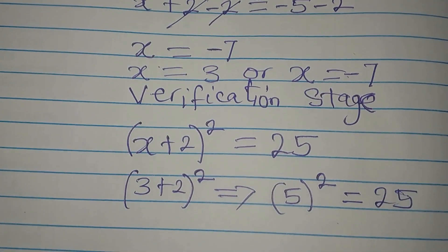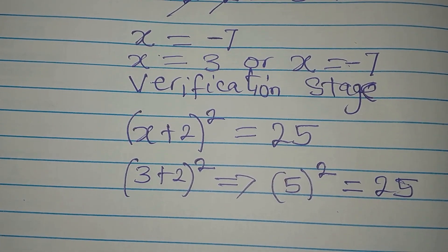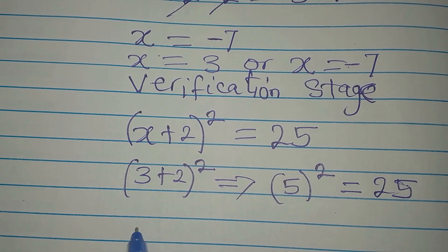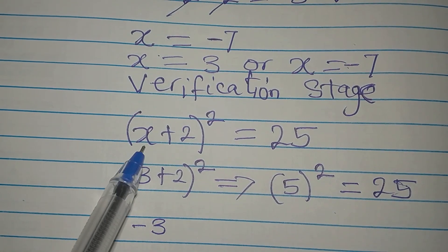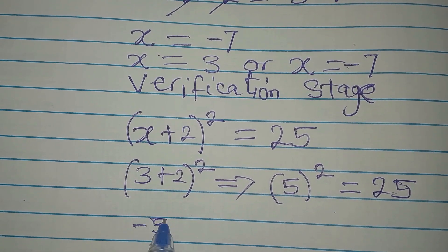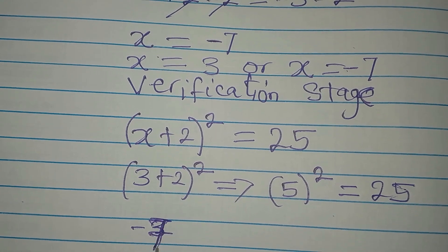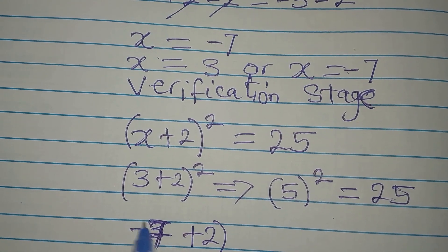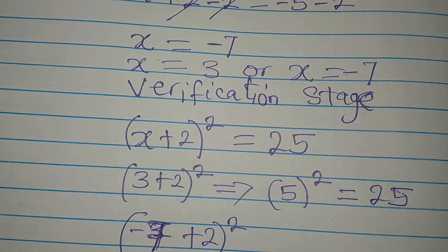Now let's get the second value which is minus 7. So we'll write minus 7 in place of x. That is minus 7 then plus 2. This is raised to the power of 2.